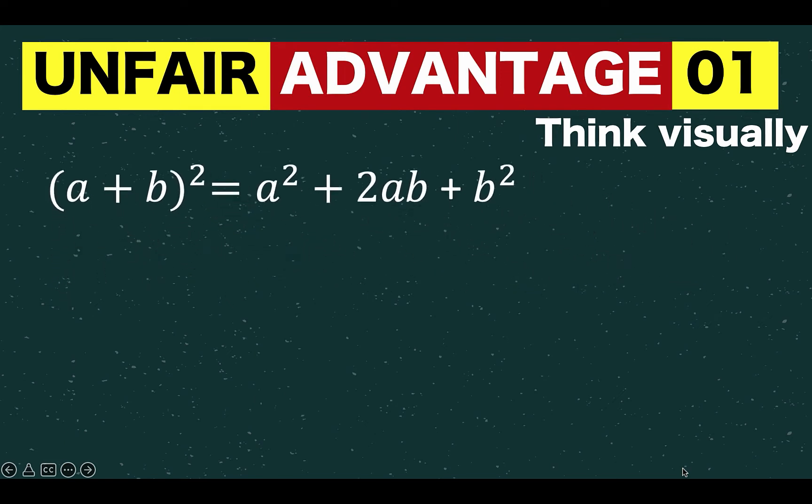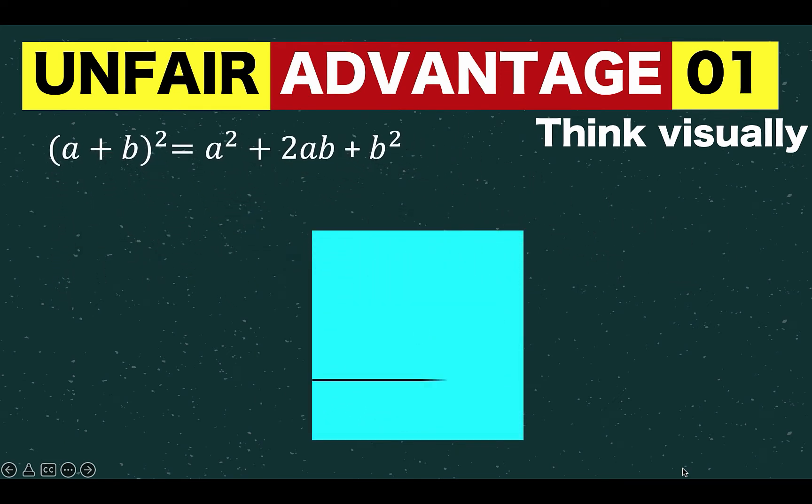This formula would look like this. You have a square, the side length of the square is a plus b, and the square is broken down into four parts.